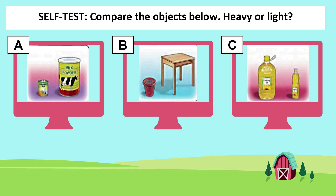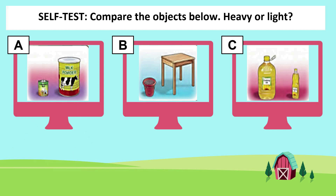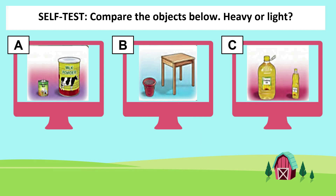Let's do a self-test. Compare the objects below — heavy or light. Picture A: which is heavier, which is lighter? Yes, the small milk tin is light and the big milk powder tin is heavy. Picture B: which is lighter? Yes, you are right — the waste paper basket is lighter than the table. Picture C: yes, the big oil bottle is heavy and the small bottle is light.